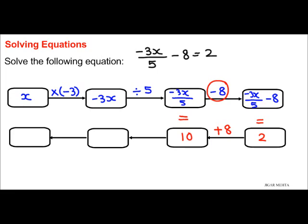Now, divide by 5 means the opposite will be multiply by 5. So, 5 times 10 will be 50. So, negative 3x equals 50.